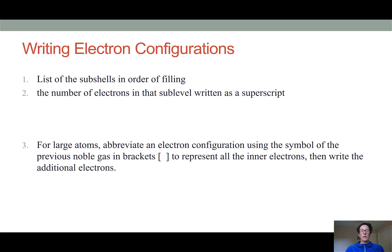So when writing electron configurations, there's a couple of rules that can help you do this correctly. First off, you should always list the orbitals in the order of filling, meaning in the order of lowest energy to highest energy. And then we indicate the number of electrons within that sub-level using a superscript.